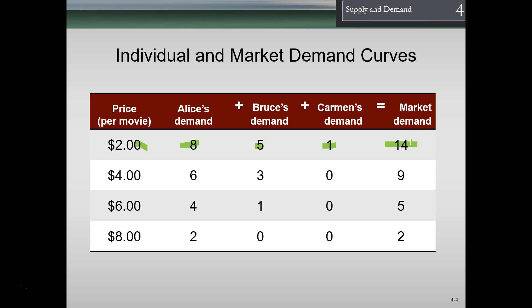As price goes up, the amount demanded goes down. At $4, Alice still wants six — down from eight. Bruce wants three — down from five. Carmen is out of the market, giving us a total of nine. At $6, Alice demands four, Bruce one, and Carmen zero, for a total market demand of five.